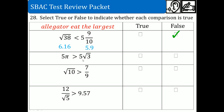Next, both sides have 5, so cancel those out and just compare pi and the square root of 3. Pi is 3.14, which is automatically greater than the square root of 3 (which is less than 3), so that is true. Then, the square root of 10 is close to the square root of 9, so it's about 3.16. Is 3.16 greater than 7 divided by 9, which is 0.7? Yes, that is true.